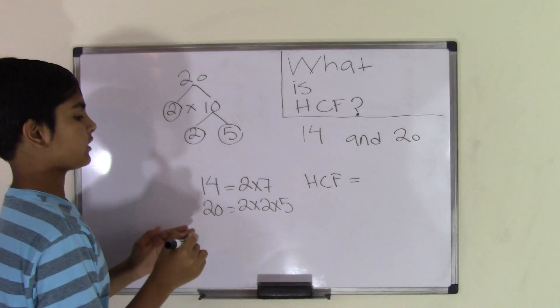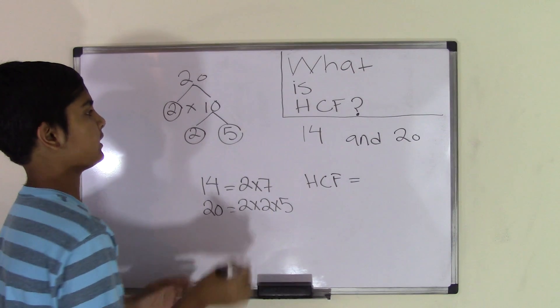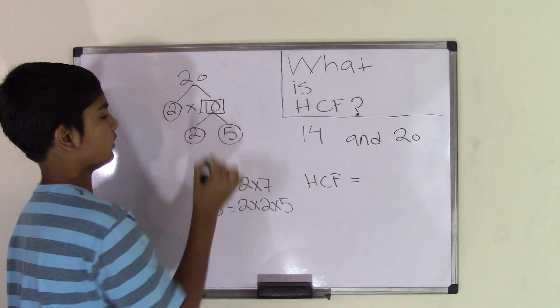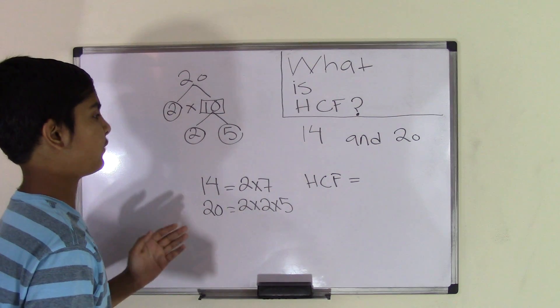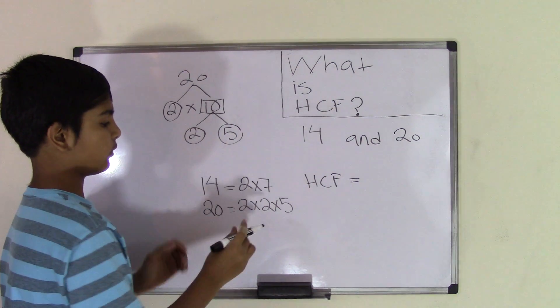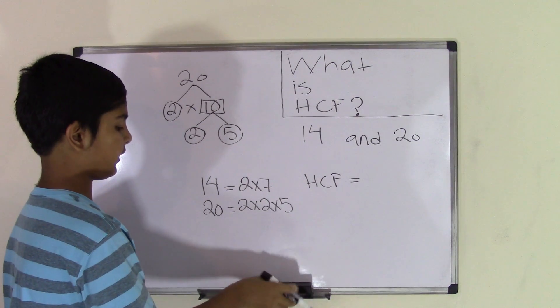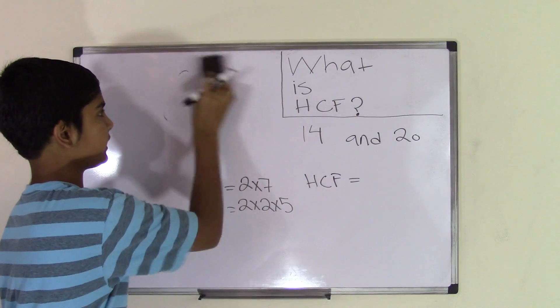So the factors are the numbers that are circled, all of them. Now, just because I circled these numbers doesn't mean that number 10 is not also a factor of 20. Number 10 is a factor of 20, but we're writing down the prime factors that are circled. So these are all the factors for each of the numbers, 14 and 20.